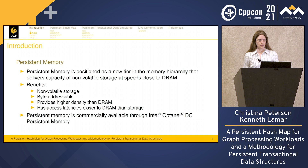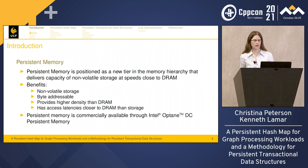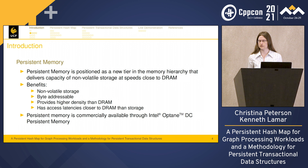Persistent memory is a new tier of memory. It sits right between DRAM and NAND SSD. The benefits are that it's non-volatile storage, byte addressable, provides higher density than DRAM, and has access latencies closer to DRAM than storage. Persistent memory is commercially available through Intel Optane DC — it's in use today.